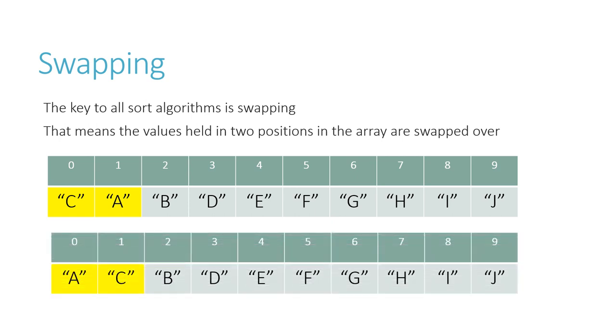So here, the first two elements in the list are C and A. They're the wrong way round. So we swap them. Element 0 becomes A and element 1 becomes C.